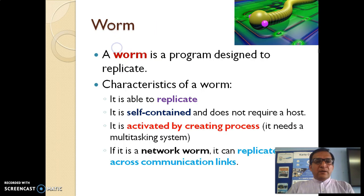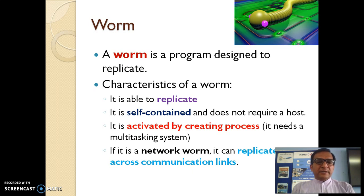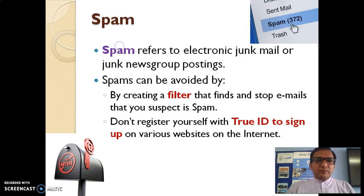Next is the worm. A worm is a program designed to replicate itself. Its characteristics are: it is able to replicate, it is self-contained and does not require a host, and it is activated by creating a process — it needs a multitasking system. If it is a networking worm, it can replicate across computing and communication links, which is different from a virus. Most importantly, it can slow down an entire network.